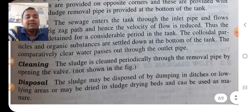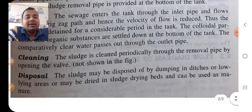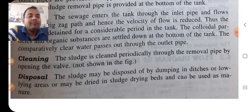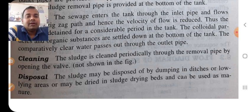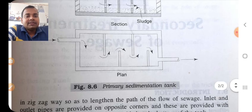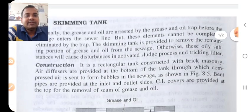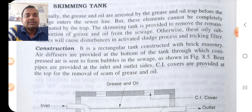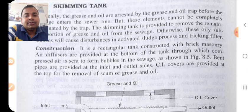Cleaning: the sludge is cleaned periodically through the removal pipe by opening the valve. Disposal: the sludge may be disposed of by pumping, dumping in a ditch or low-lying area, or in sludge drying beds, and can be used as manure. This topic carries five marks. Thank you, students.